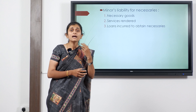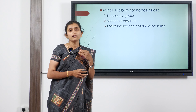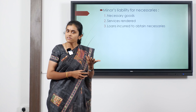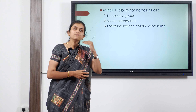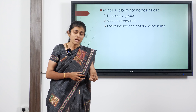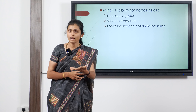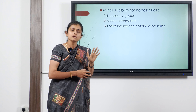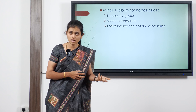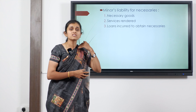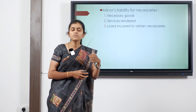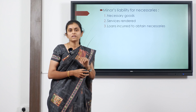The same holds for services rendered — any services for educational upliftment, skill development, legal advice, medical advice, or any kind of service rendered for a minor will be reimbursed through the property of the minor. Minor as such will not be held personally responsible. Similarly for loans: any loan taken by a minor to obtain basic necessary goods or services is treated the same as if those goods or services were rendered directly — reimbursement is through the minor's property.